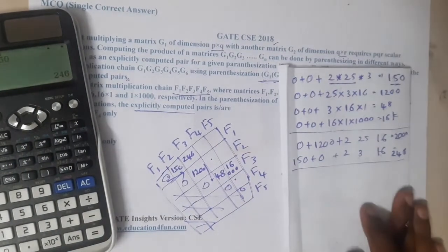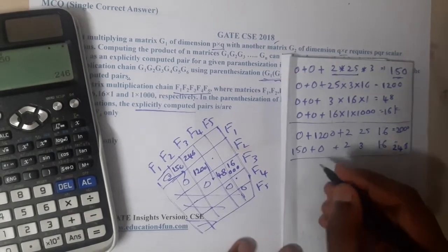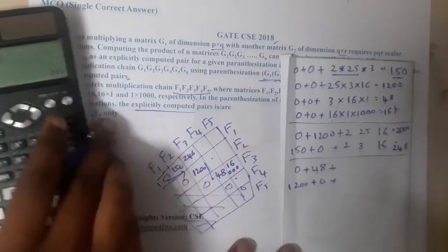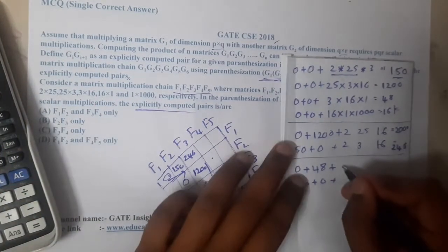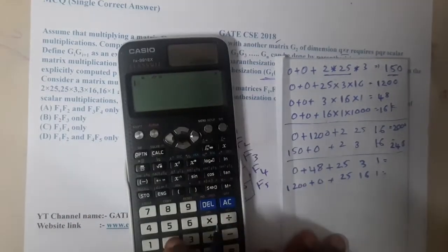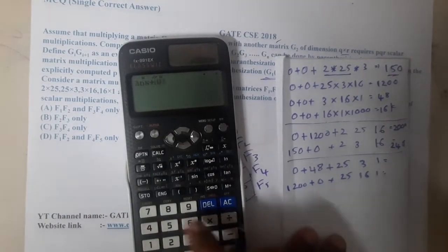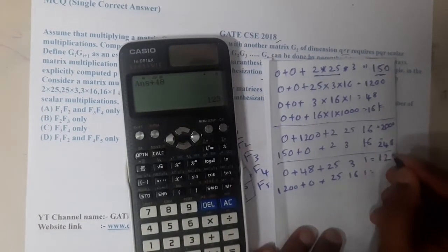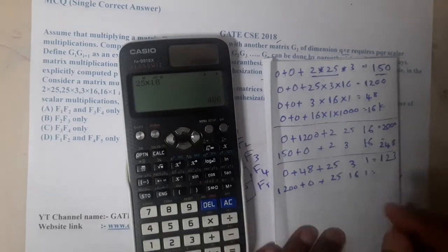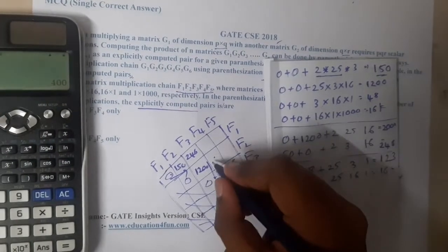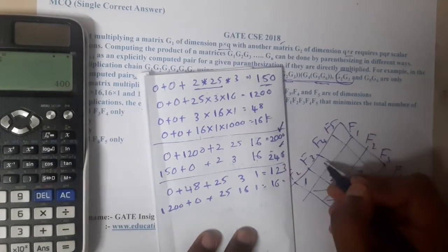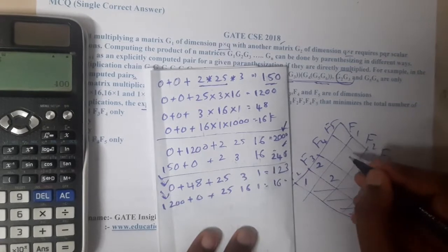For f2 to f4, calculating: 1200 + 0 first. Then 25×3×16 + 48 is not right — let me recalculate: 25×3 = 75 + 48 = 123, and 25×16 + 1200 = 400 + 1200 = 1600. The minimum is 123, so this value is 123. The k values recorded are k=2 for the first, k=2 for the second.